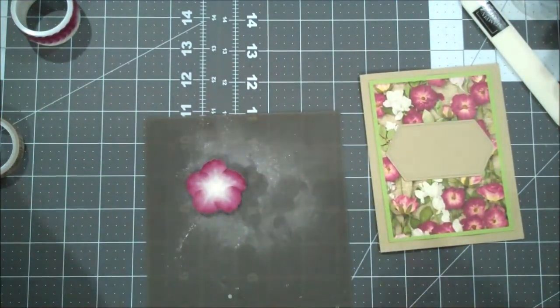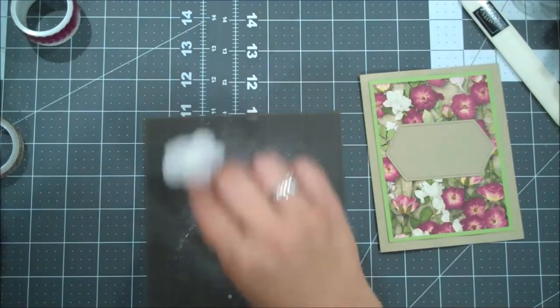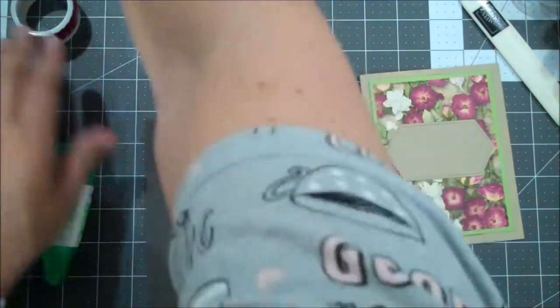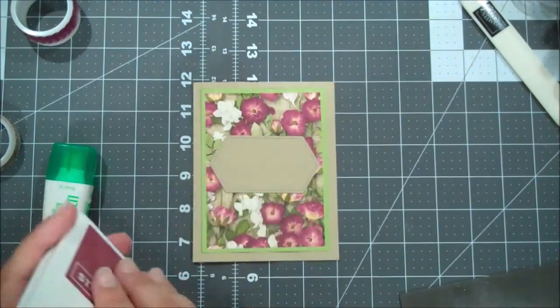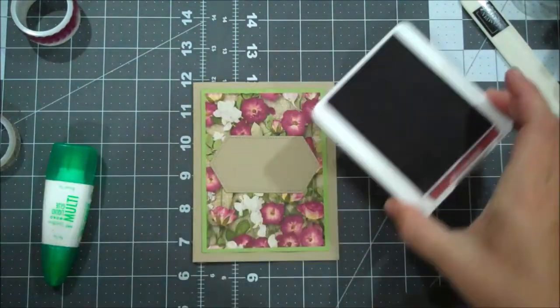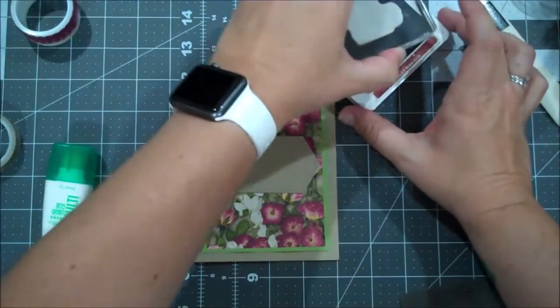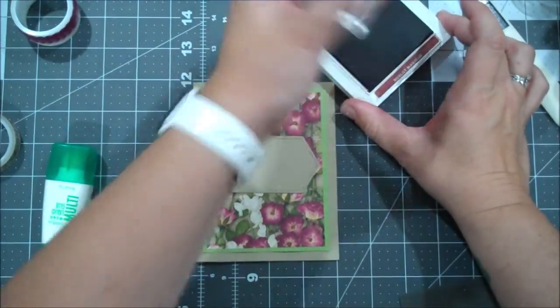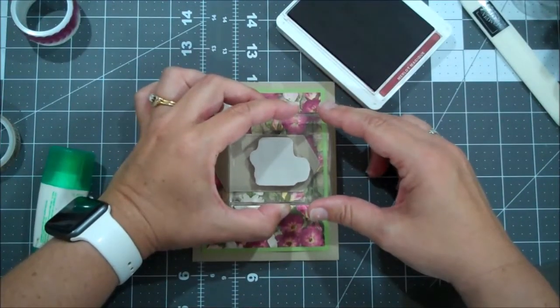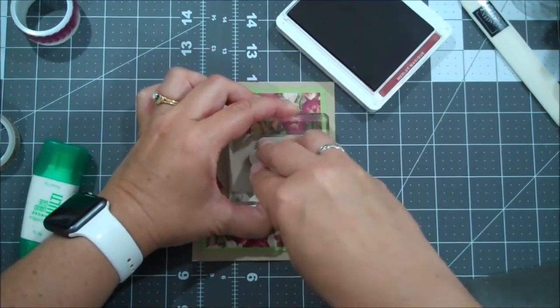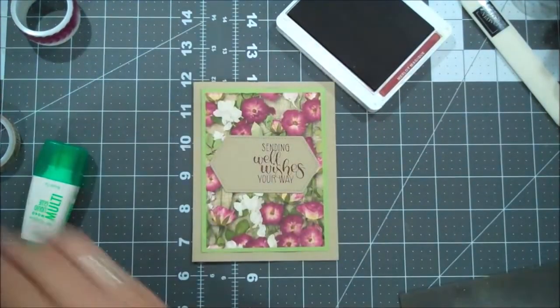Okay, so then let's stamp our sentiment first so that we make sure we have space. I'm going to open my Merry Merlot. We're going to ink up our sentiment real well and then we are going to stamp that right here. Beautiful.